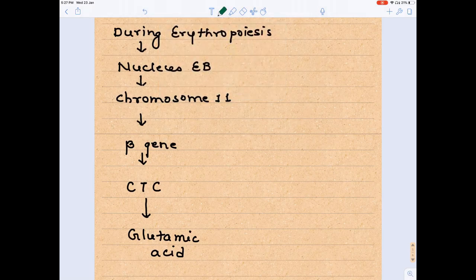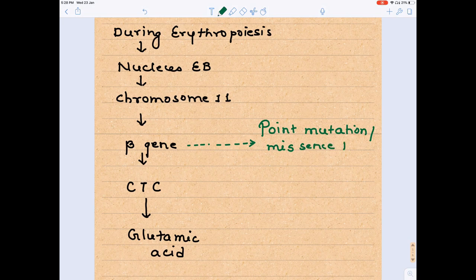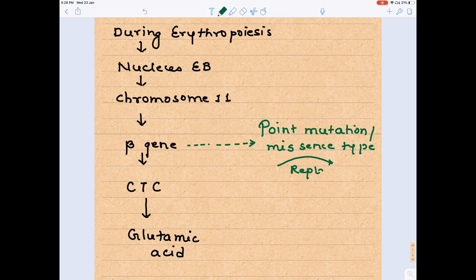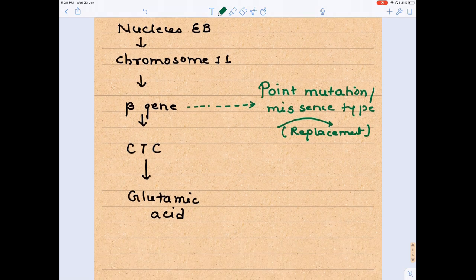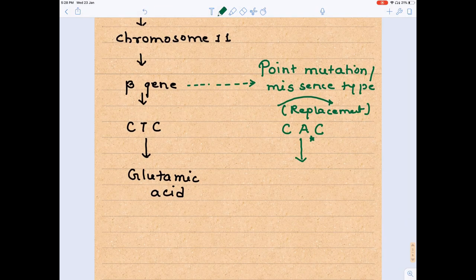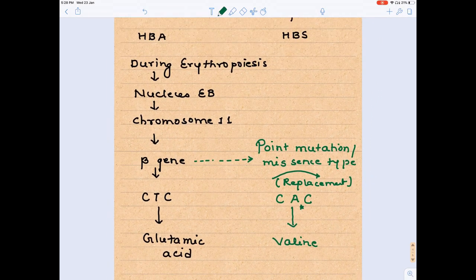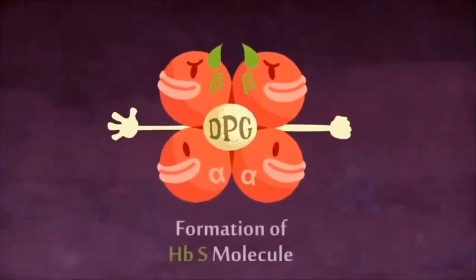But in sickle cell anemia, there is a mutation called point mutation. This point mutation is missense type of point mutation. Whenever there is a missense type of point mutation, something is getting replaced by something else. Here, CTC is getting replaced by CAC. So if you see, there is a replacement of T by A, thymidine by adenosine. Instead of glutamic acid, CAC will be coding valine. This is how formation of HBS occurs.